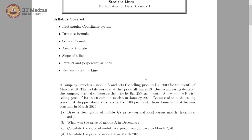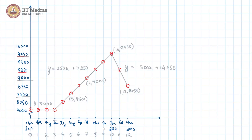For part b of this question, it is asked: what is the price of Mobile A in December? December corresponds to the point on the graph with a price of 9500. So 9500 is our answer for part b.